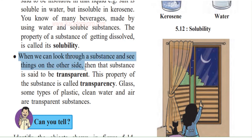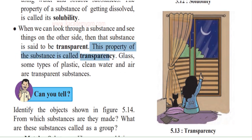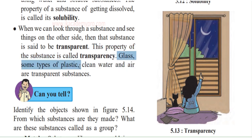When we can look through a substance and see things on the other side, that substance is said to be transparent. Glass, plastic, clean water, and air are transparent substances. This property of a substance is called transparency.